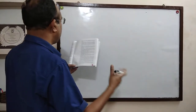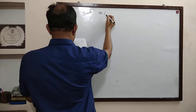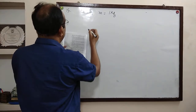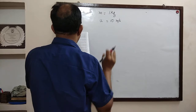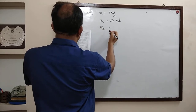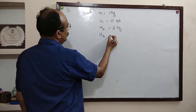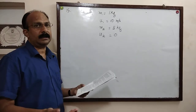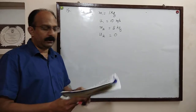Given: mass of the first object M1 = 1 kg, moving with velocity U1 = 10 m/s. It is colliding with another body of mass M2 = 5 kg, which is stationary, so its initial velocity U2 = 0. Then they both move off together in the same straight line after collision. We need to calculate the total momentum just before the impact, just after the impact, and the velocity of the combined object.